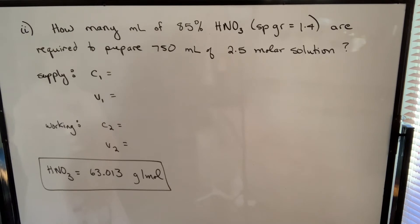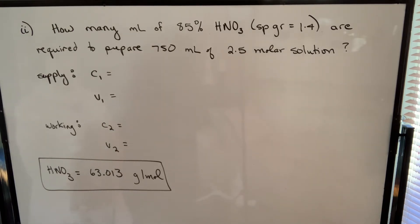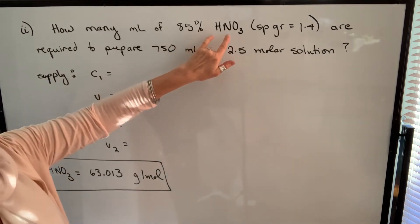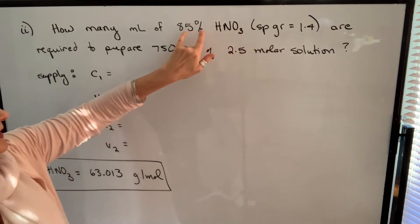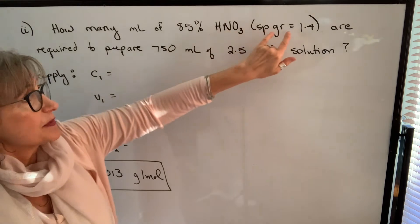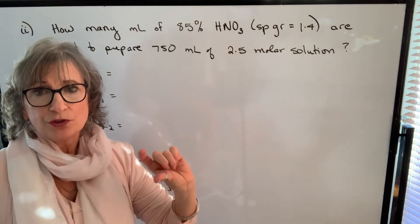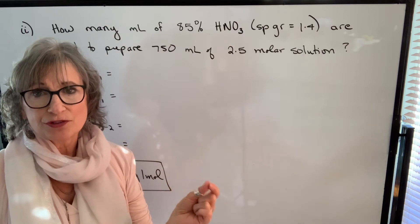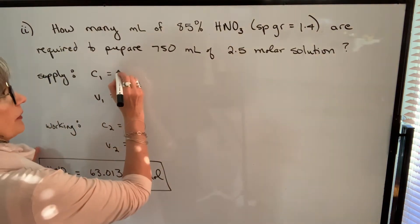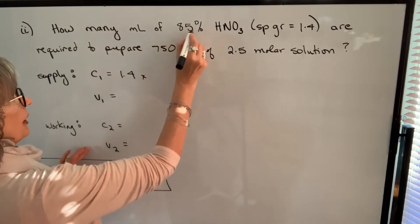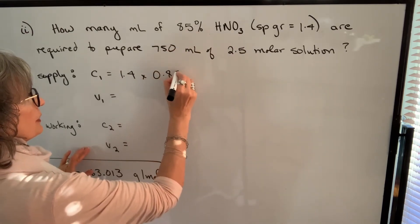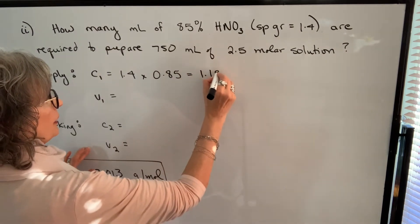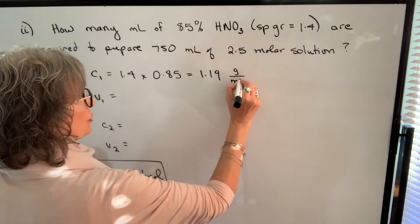The next example asks: how many milliliters of 85% pure nitric acid with a specific gravity of 1.4 are required to prepare 750 milliliters of a 2.5 molar solution? The supply solution is given by purity and specific gravity. From the previous video, we multiply specific gravity of 1.4 by the assay of 0.85 to get concentration in grams per milliliter.